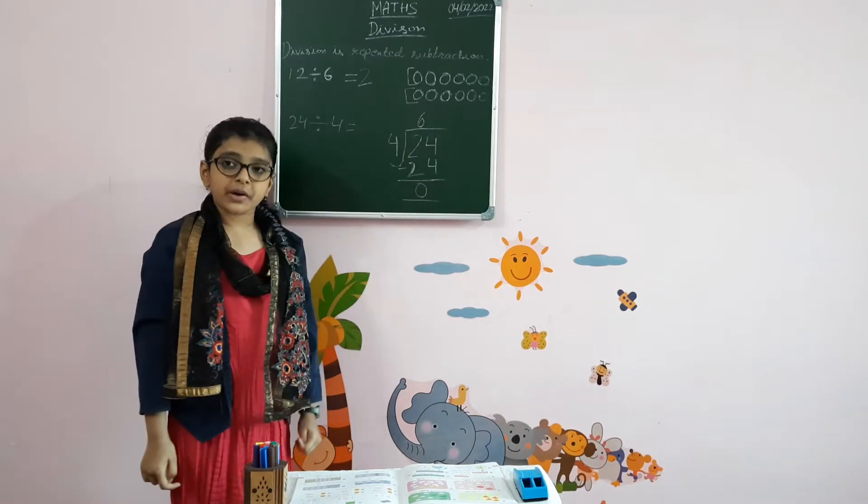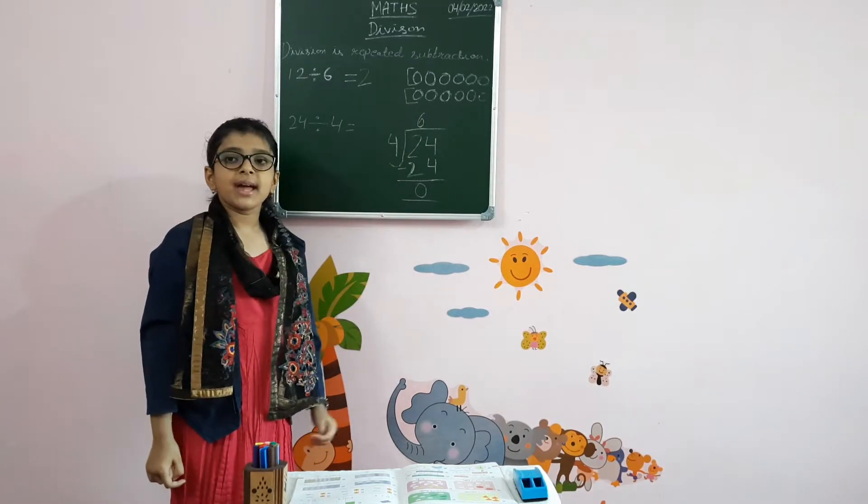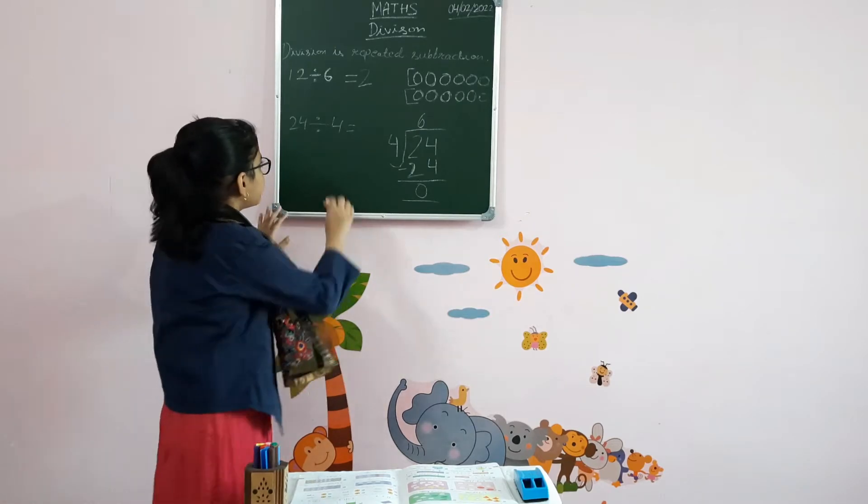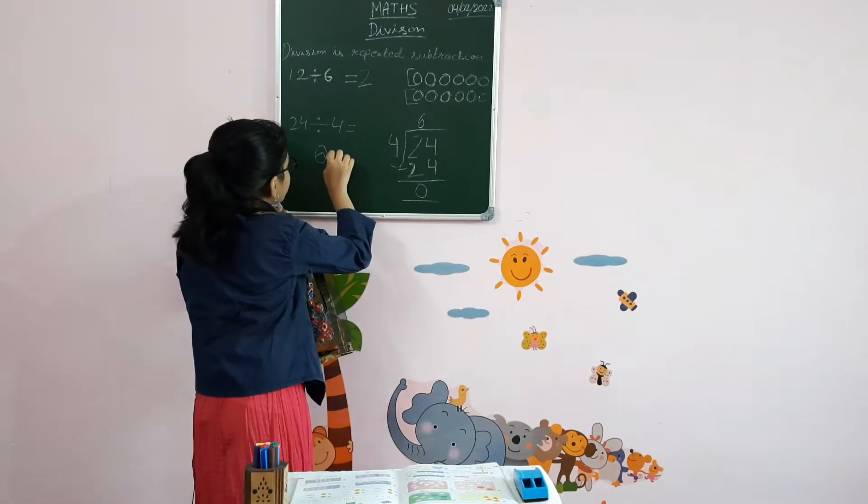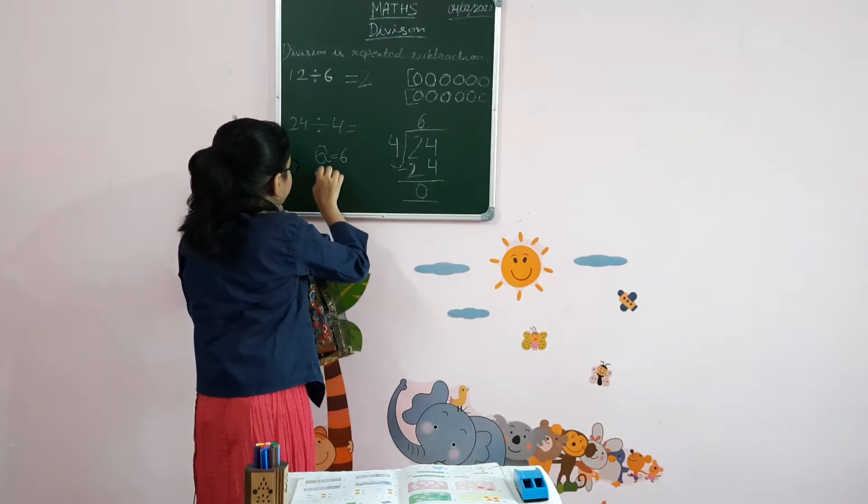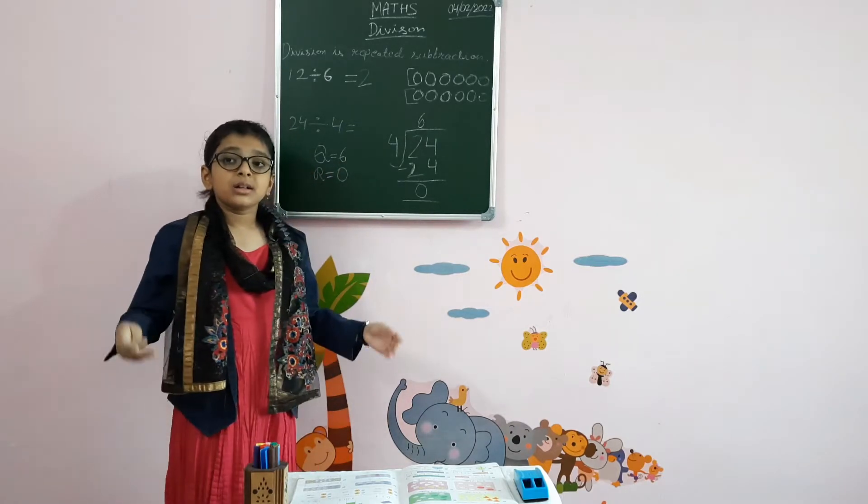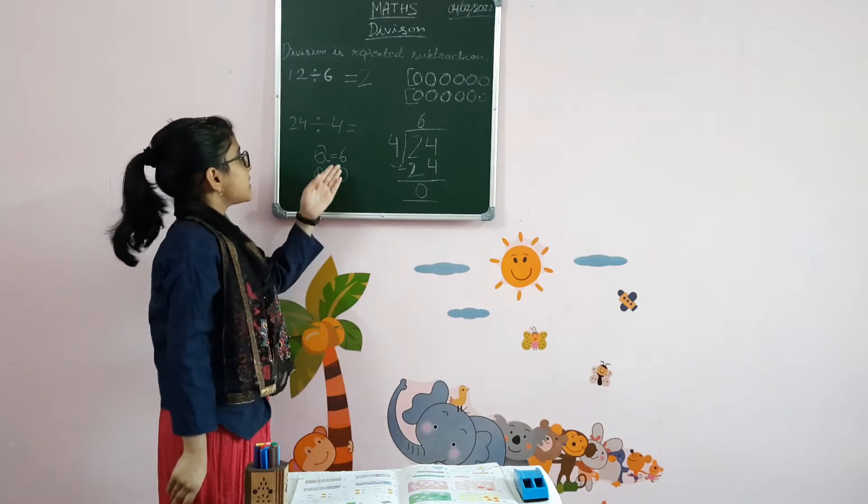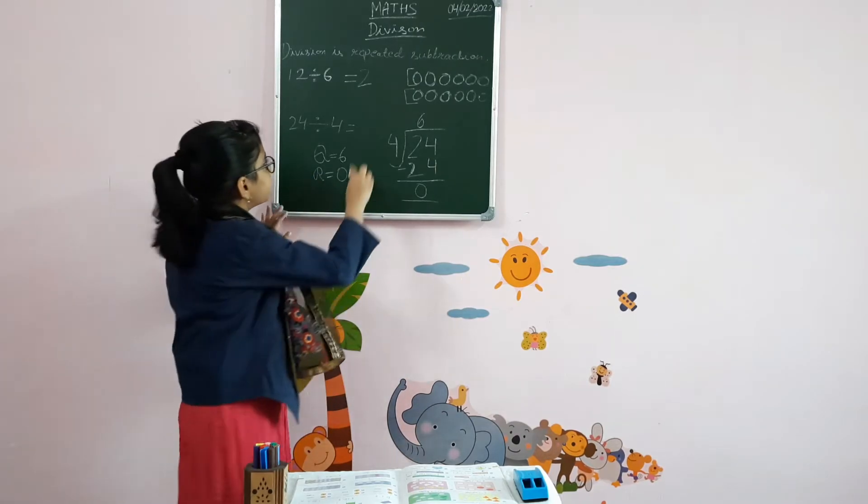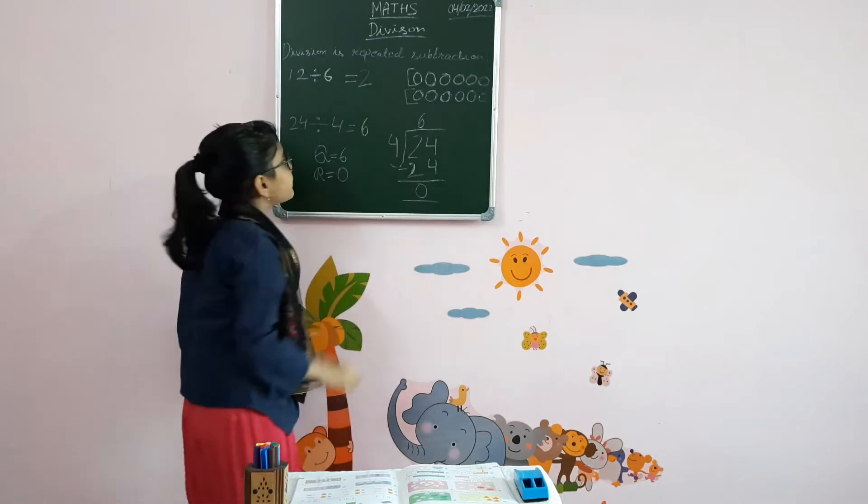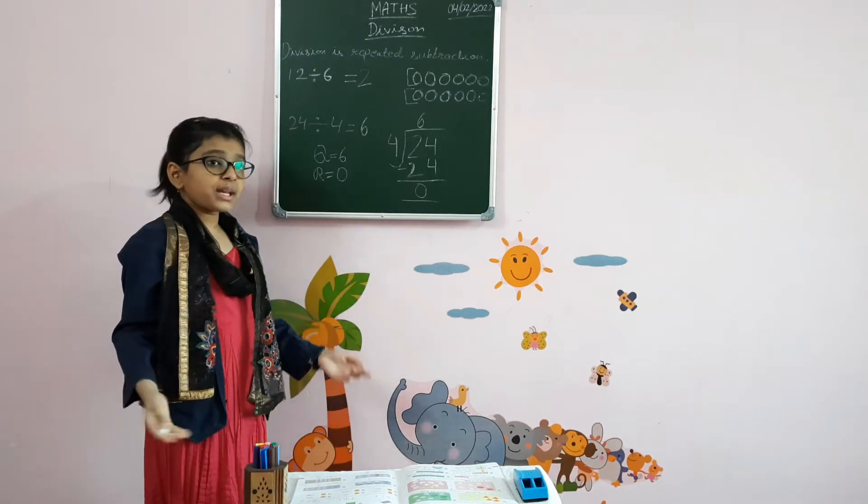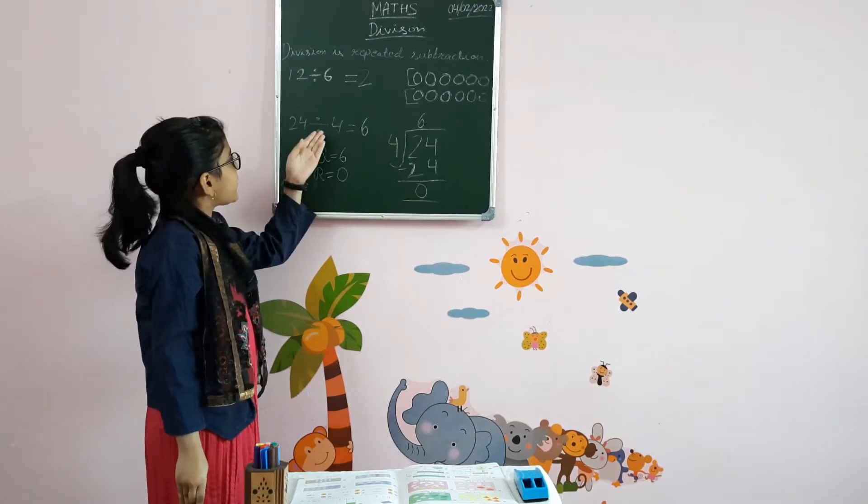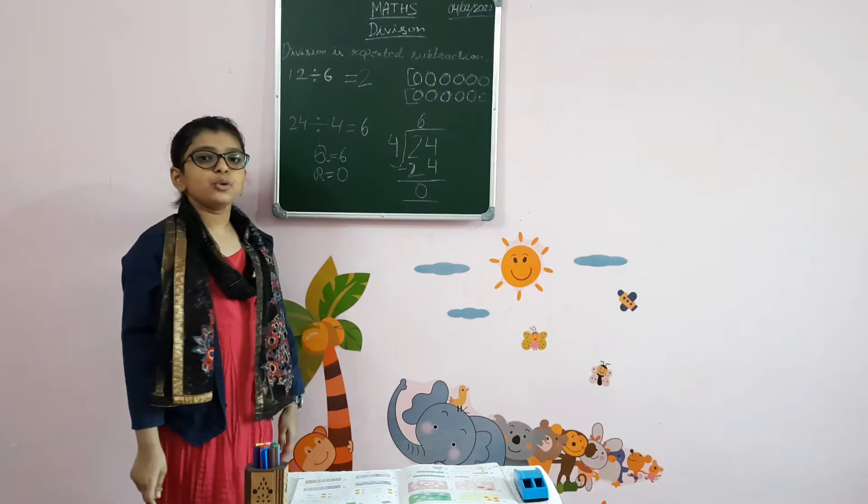6 is our quotient and the remainder is 0. The quotient is always the answer. That means 6 is our answer. So, we can say 24 divided by 4 is equal to 6.